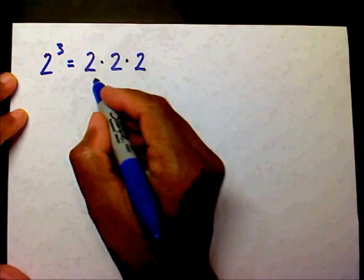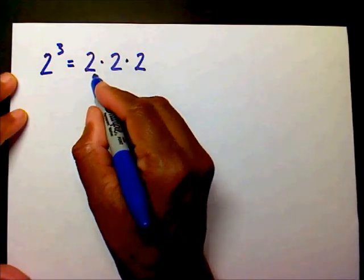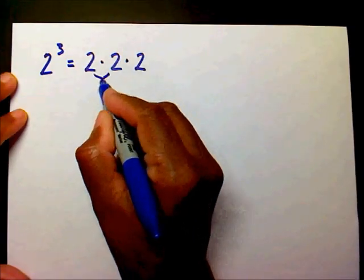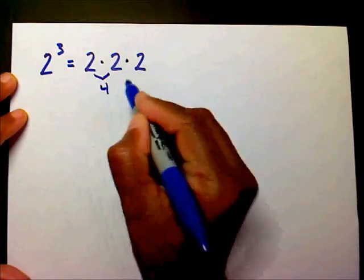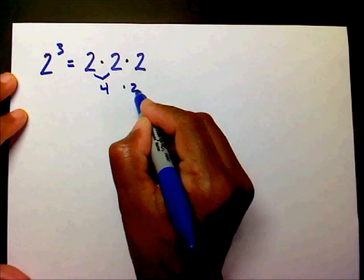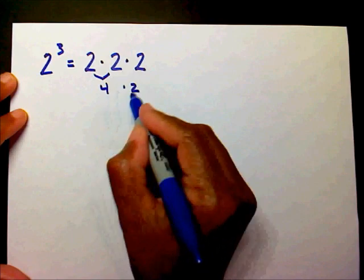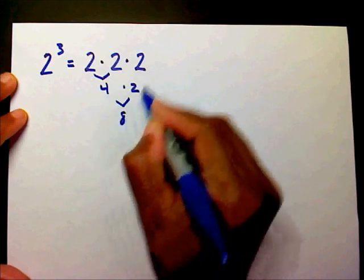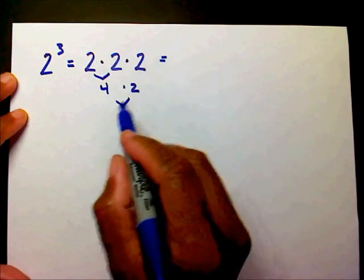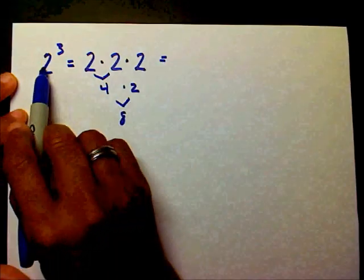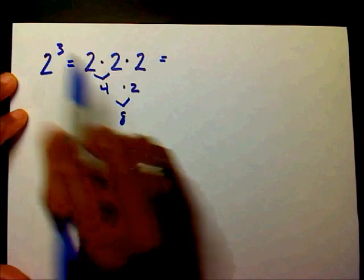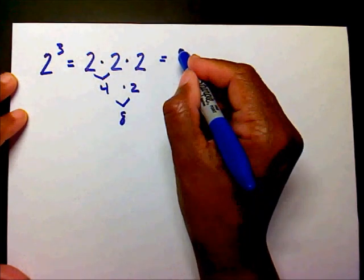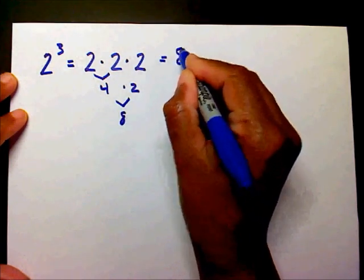So let's multiply this. 2 times 2 is 4, and 4 times 2 is 8. So therefore, 2 to the third equals 8.